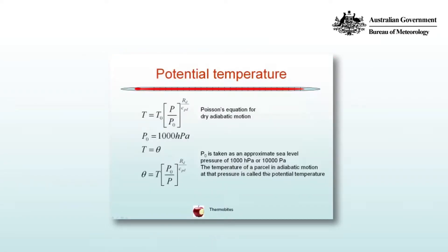We can derive Poisson's equation for dry adiabatic motion in the atmosphere, where a parcel of air does not undergo phase changes and does not exchange heat with its environment. Poisson's equation is written as T = T₀(P/P₀)^(Rd/Cpd), where the subscript d indicates that these constants are for dry air.